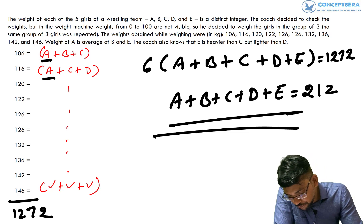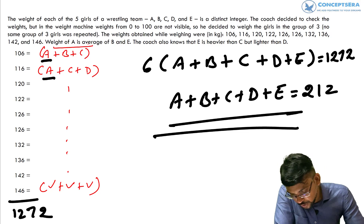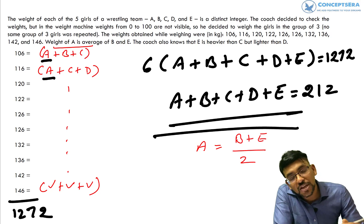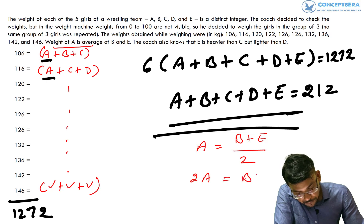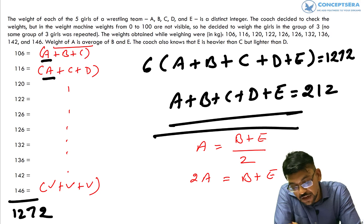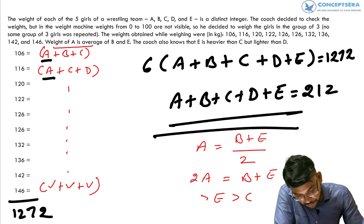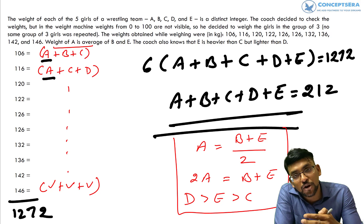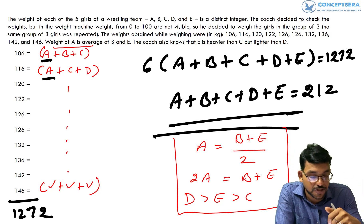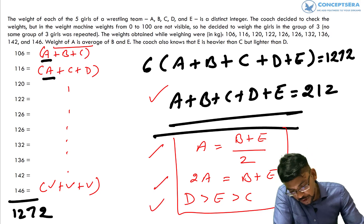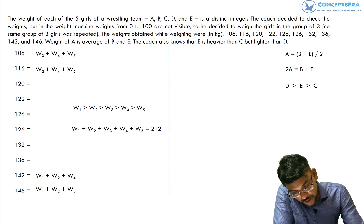After getting the first equation, we look at other information. It is given that the weight of A is the average of B and E — meaning A lies between B and E, so 2A = B + E. One more piece of information: E is heavier than C but lighter than D. From the given data alone, we don't yet know the heaviest and lightest, so let's organize this systematically.